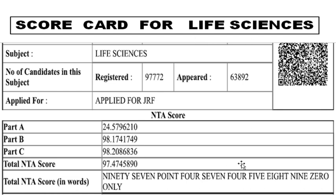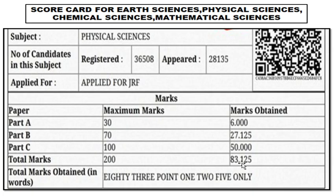Next, regarding the NTA score for life sciences students — this is where you can see how many marks you are getting out of 200. That will be completely masked by the NTA. If you check the scorecard for health sciences, physical sciences, chemical sciences, and mathematical sciences, they will be giving you a maximum mark and individual marks — for example, if the maximum mark is 30, how many marks you are getting out of 30.